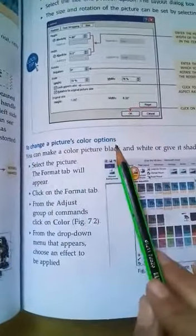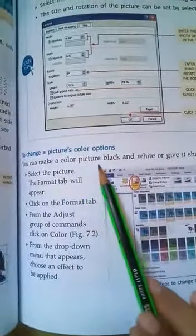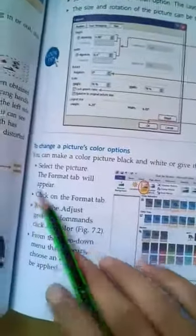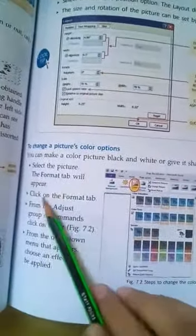To change a picture's color options, you can make a color picture black and white or give it shades of gray. Select the picture, the Format tab will appear.